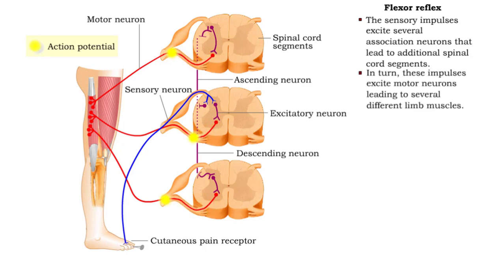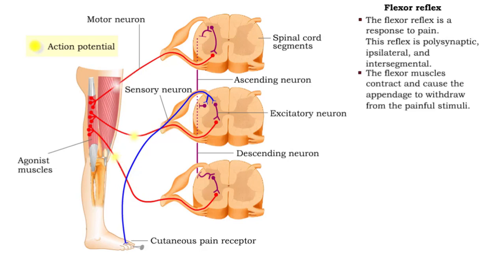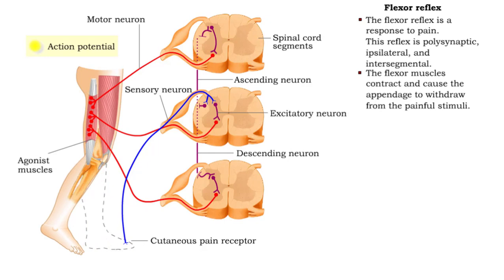These impulses excite motor neurons leading to several different limb muscles. The flexor muscles contract and cause the appendage to withdraw from the painful stimuli.